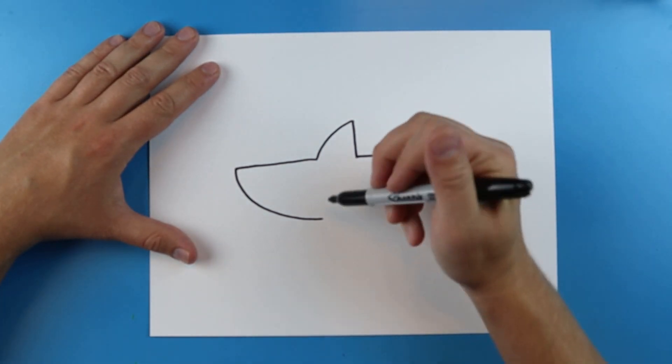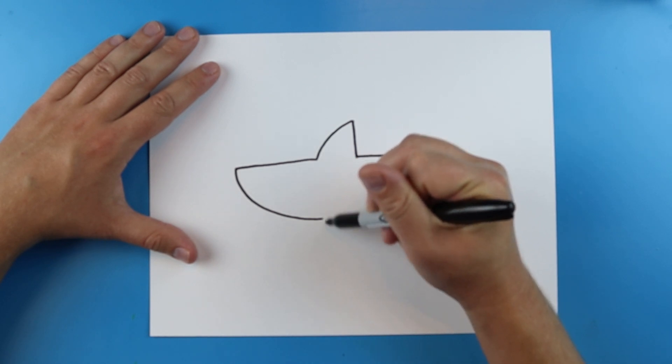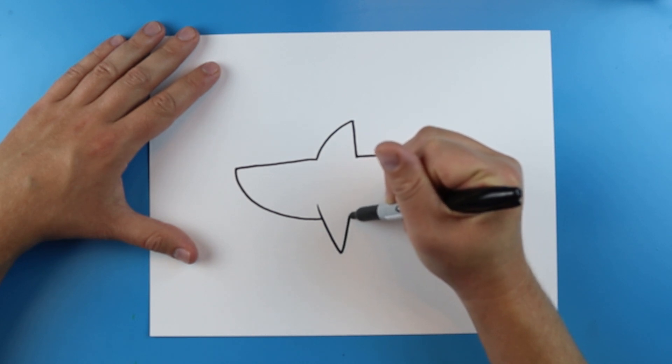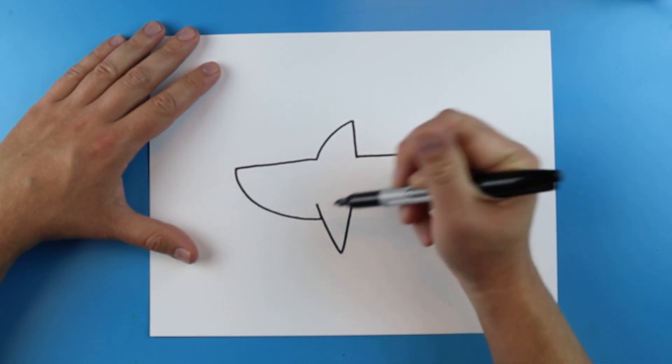And once you get to here, you want to make the little flipper. To do that, just draw a letter V. So draw a line that goes down and then back up.